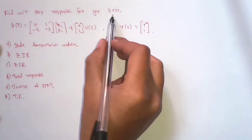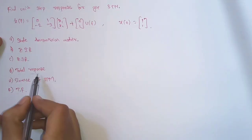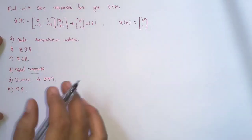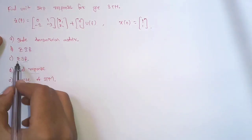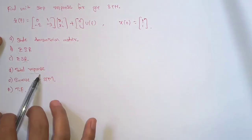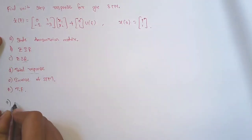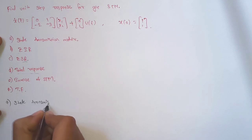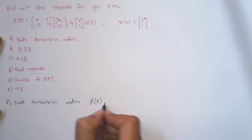We are given to solve: state transmission matrix, zero input response, zero state response, inverse of the state transmission matrix, and the transfer function. The total response is the sum of zero input response and zero state response. First we'll calculate the state transmission matrix, then the zero input and zero state responses, and add them to get the total state response.